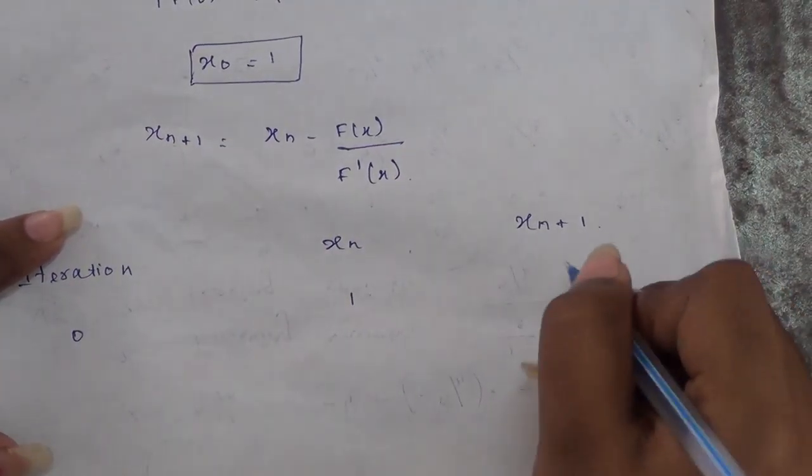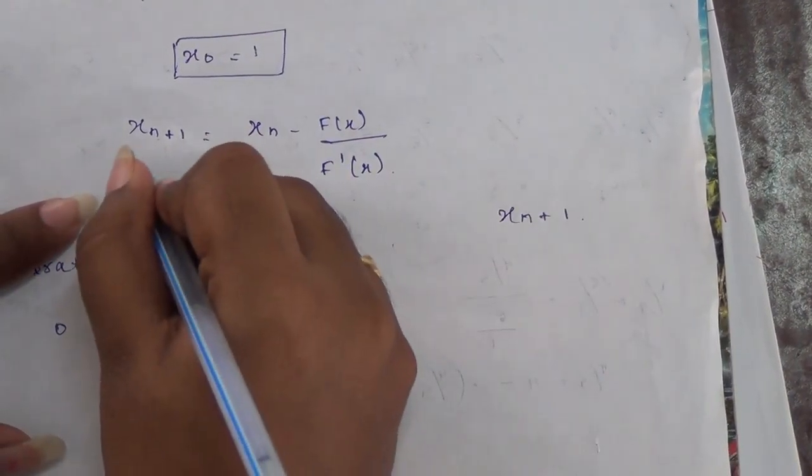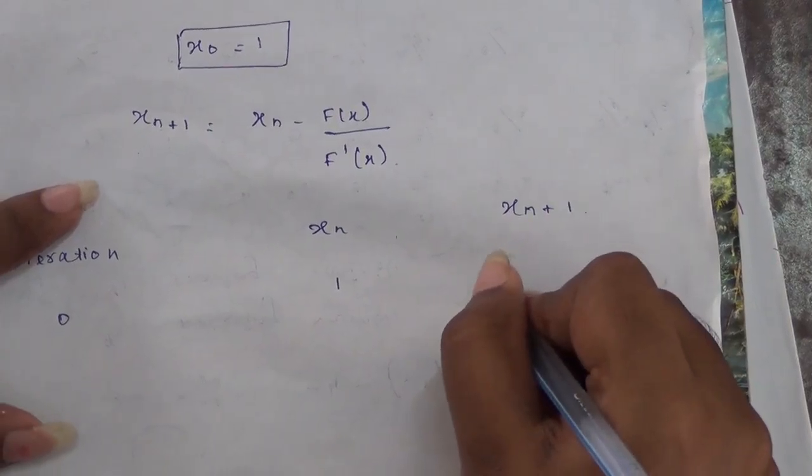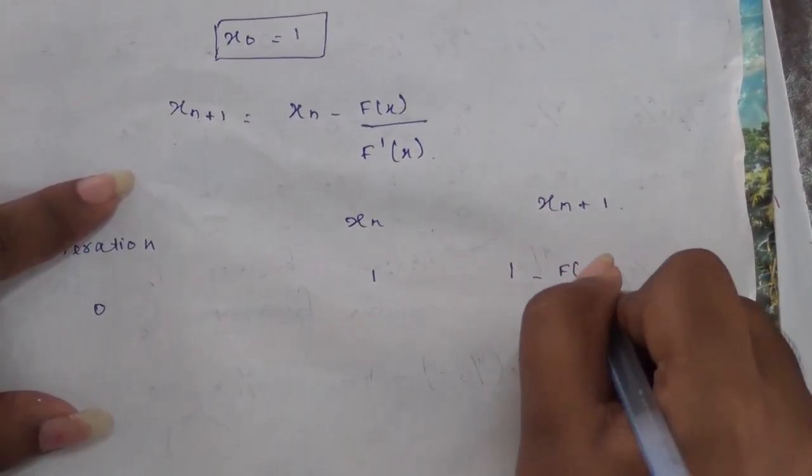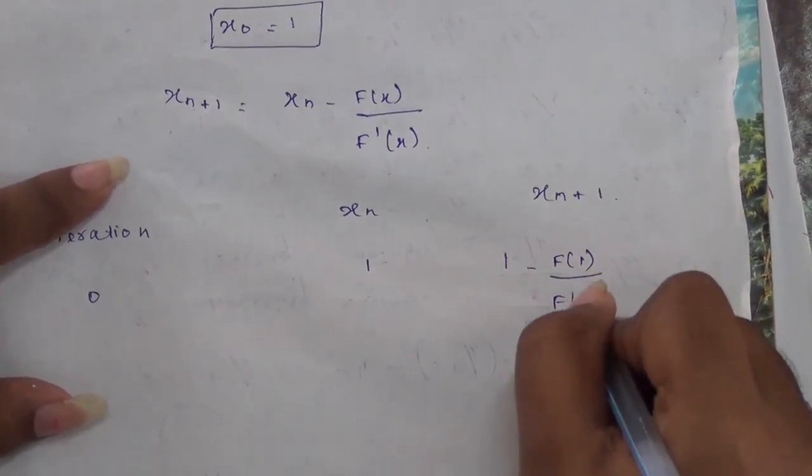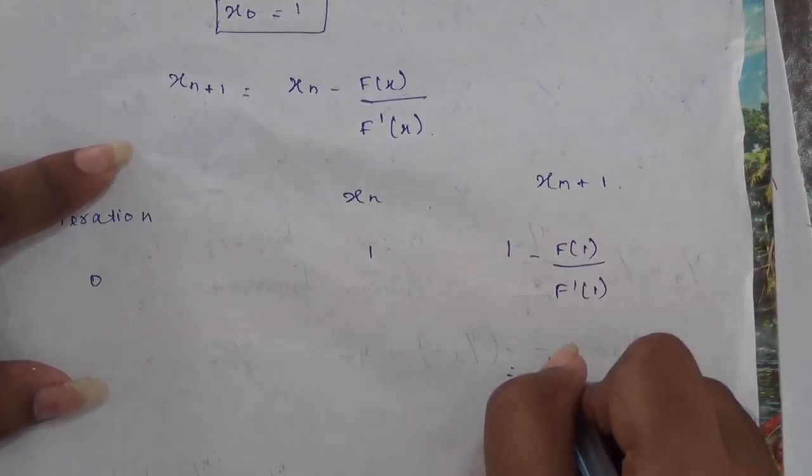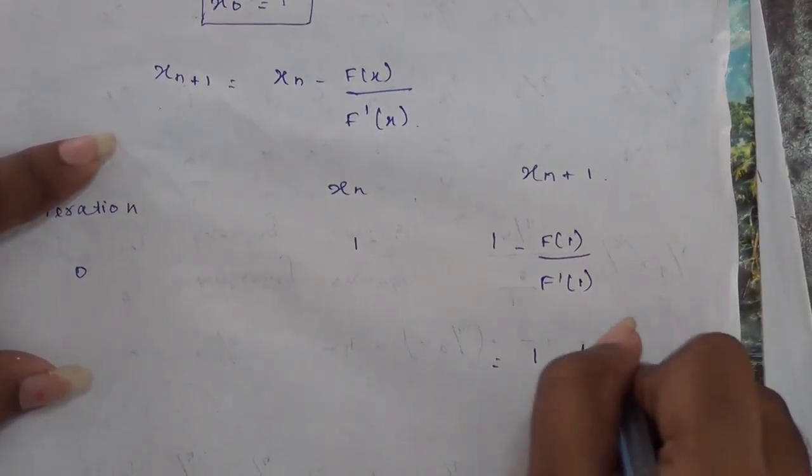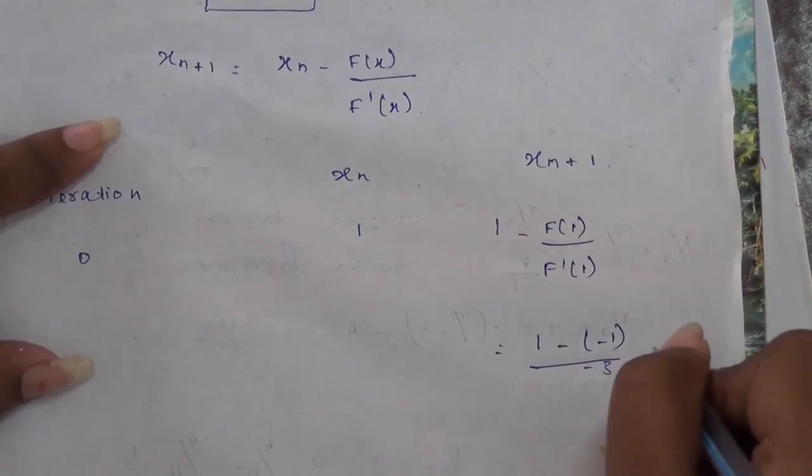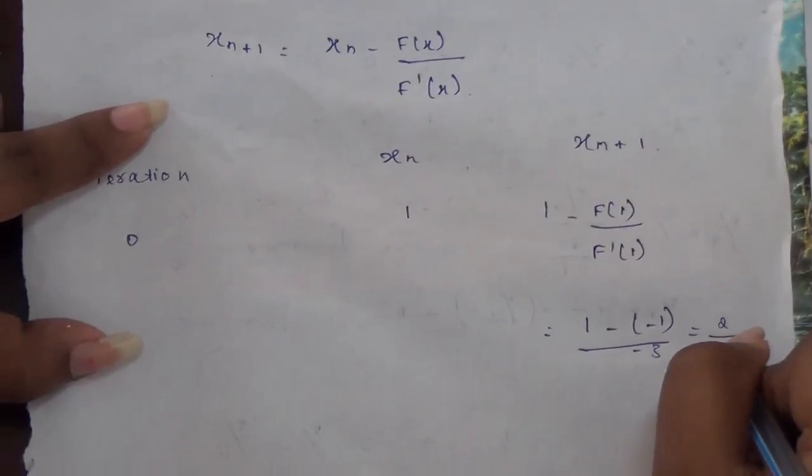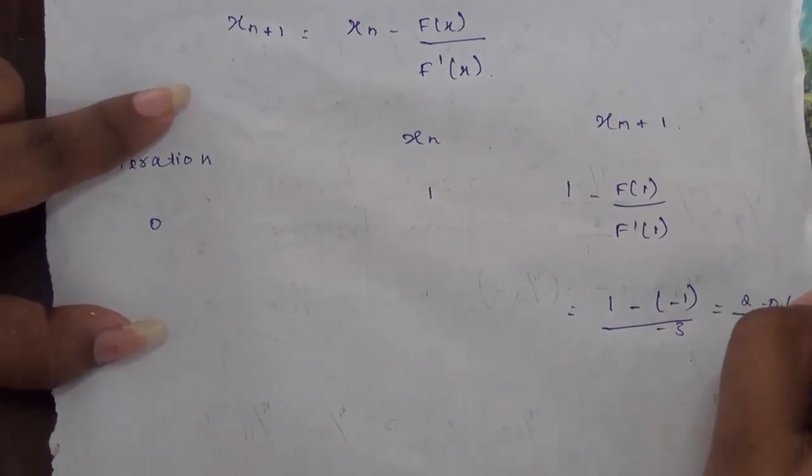And we have to substitute in the formula for x_{n+1}. So we get 1 - f(1)/f'(1). Now we get 1 - 1/(-3). So we get 2/3, which is approximately 0.66.